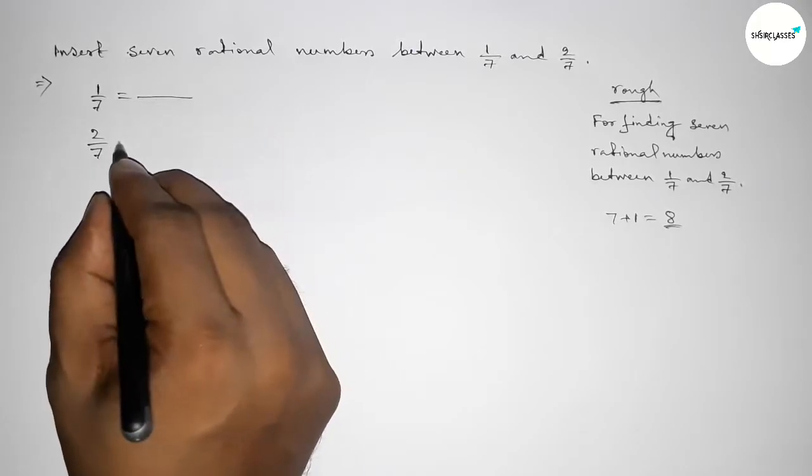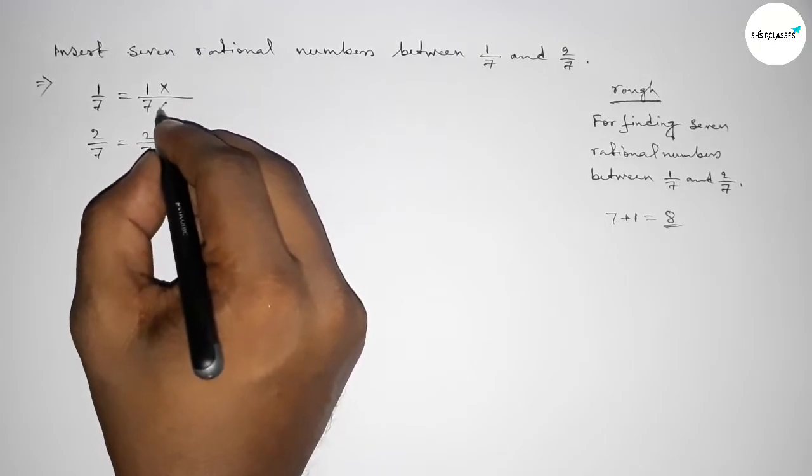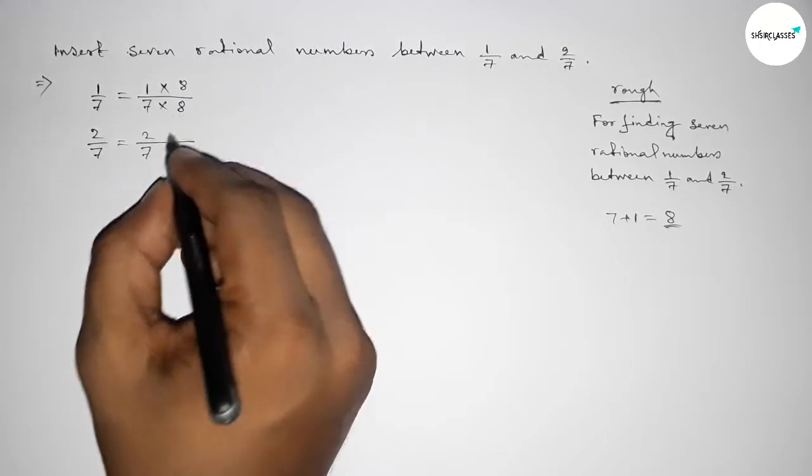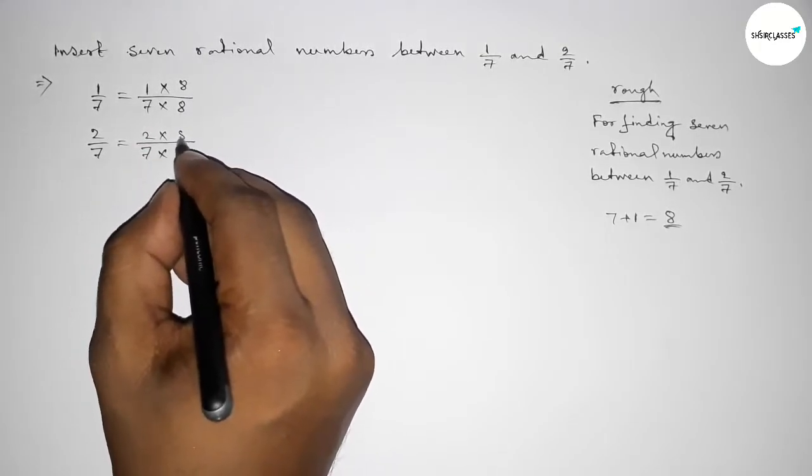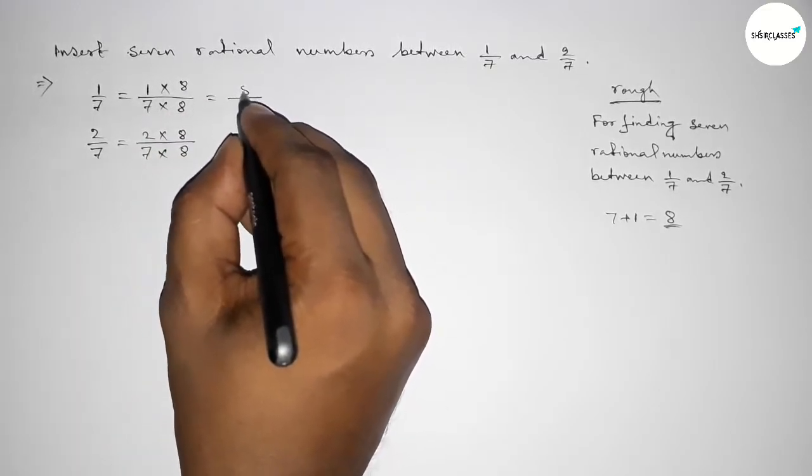So now multiplying 8 with both numbers by this way. So here multiplying by 8 and here also multiplying by 8.